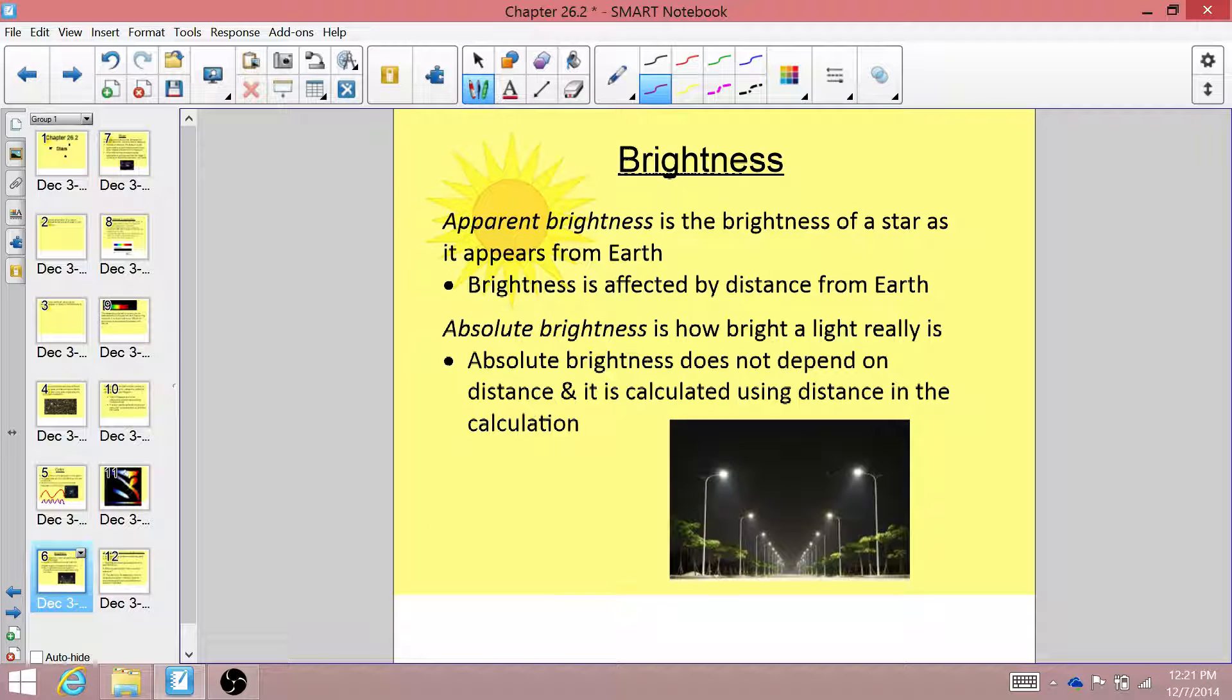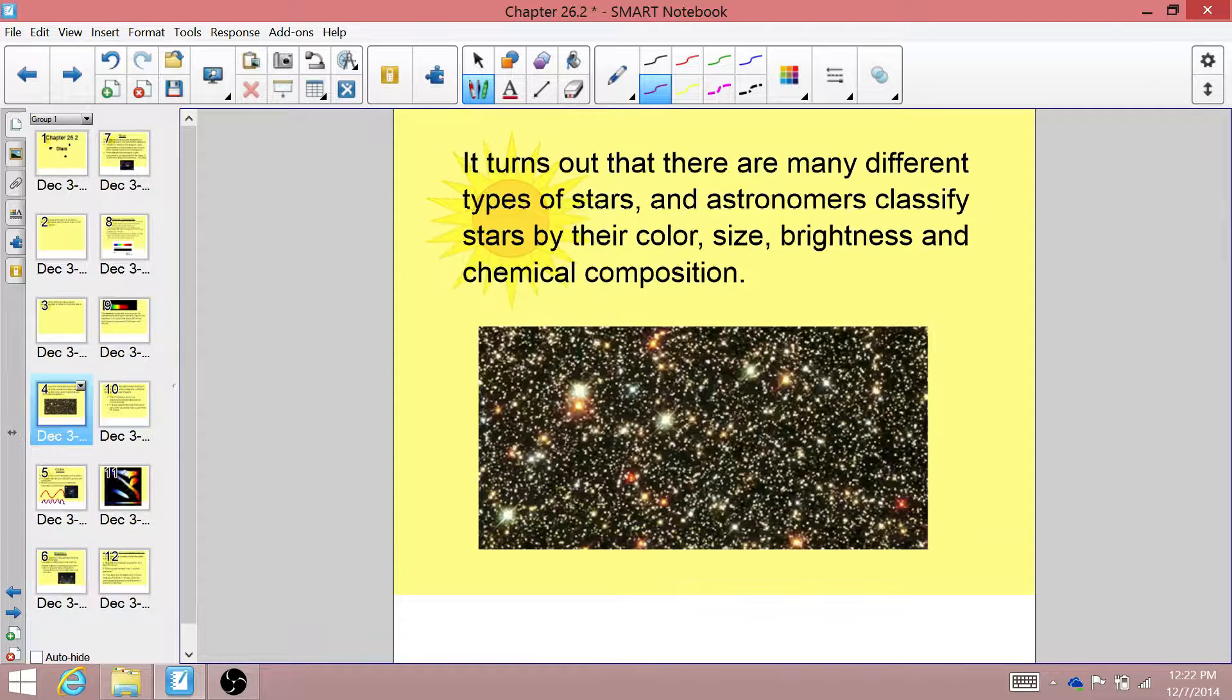Another way that we classify stars is by brightness. And there are two different kinds of brightnesses in astronomy. Apparent brightness is the brightness of a star as it appears from Earth. So if we go back to our picture, some of these stars might not actually be as bright as they look.